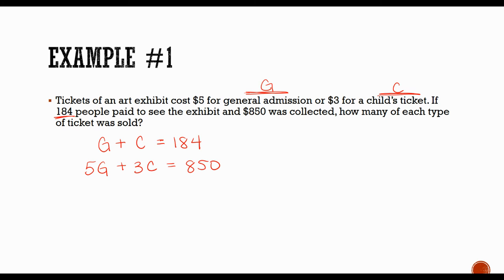Those are our two equations. Now we can use either substitution or elimination — both will work — to find what G and C equal.